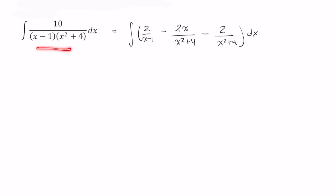All right, so I've gone ahead and rewritten this integral using the method of partial fraction decomposition. So I'm going to again write this as three separate integrals. That is 2 times 1 over x minus 1 dx minus 2 times the integral of x over x squared plus 4 dx minus 2 times the integral of 1 over x squared plus 4 dx.